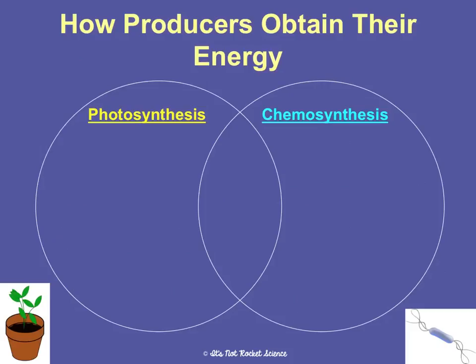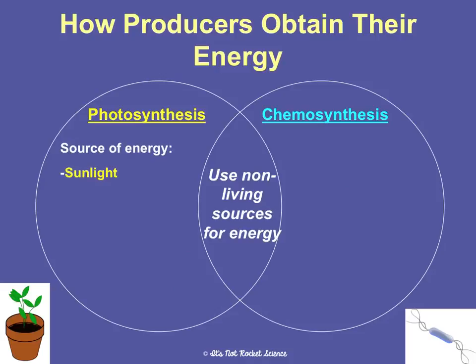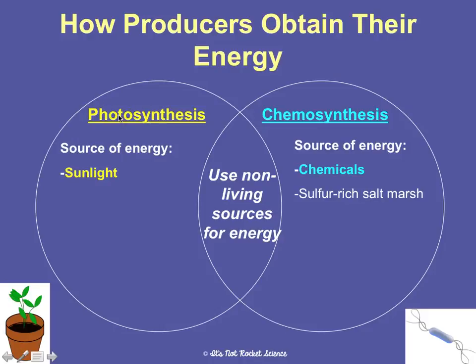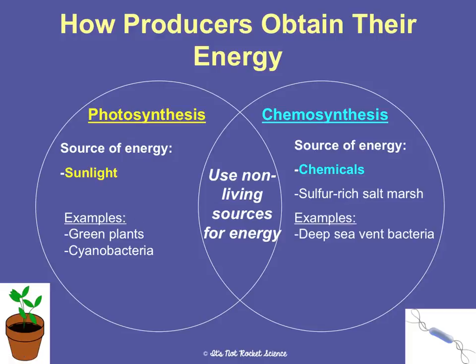How producers obtain their energy isn't just photosynthesis. There are two different processes some producers can do, and both use non-living sources for energy. Photosynthesis uses sunlight — synthesis means to make, photo means light, so this is making food out of light. Chemosynthesis is making food out of chemicals. Examples of organisms that do photosynthesis are green plants and cyanobacteria, while deep sea vent bacteria can do chemosynthesis.